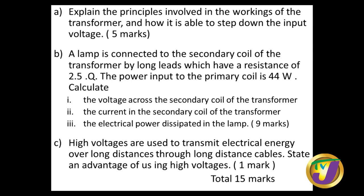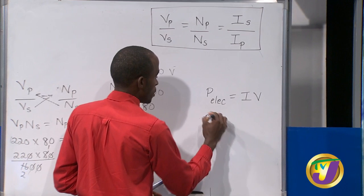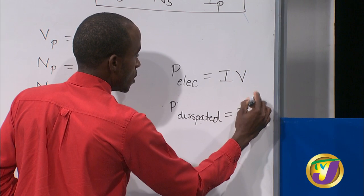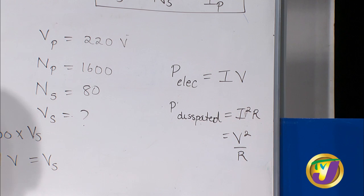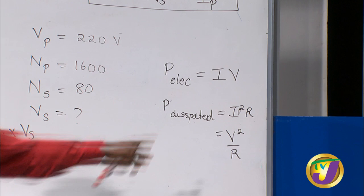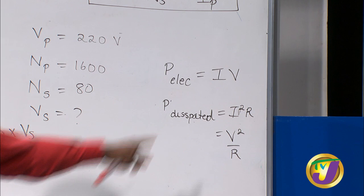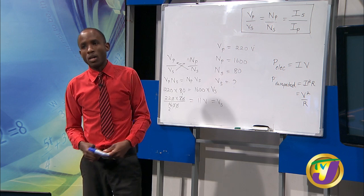In terms of electrical power dissipated in the lamp, you should recall that electrical power is current times voltage, but power dissipated can be found by I² R or V² over R — either equation will give you that. In terms of why high voltages are transmitted: if you have the same power, the higher the voltage, the smaller the current. Current creates a heating effect, so higher voltages mean smaller current and therefore smaller losses when you transmit via higher voltages.